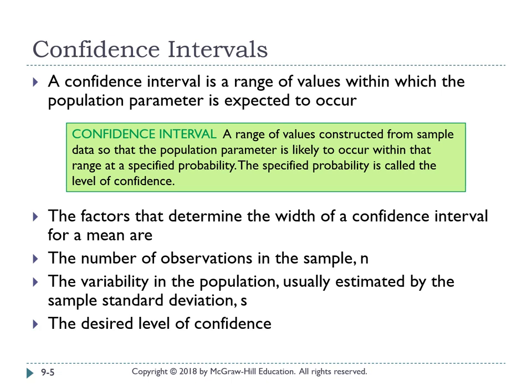Because we don't know our population mean, we use a confidence interval. An interval is a range. A confidence interval means how confident we are that our estimation of the population mean falls within a specific range. The textbook definition: a confidence interval is a range of values constructed from sample data so that the population parameter (mu) is likely to occur within that range at a specified probability — that specified probability is called the level of confidence.